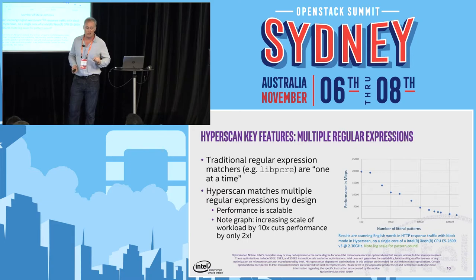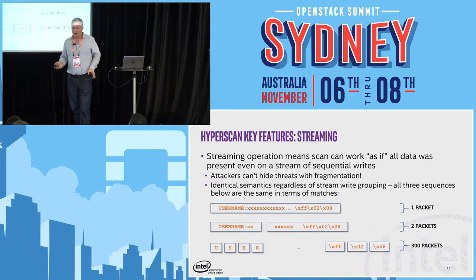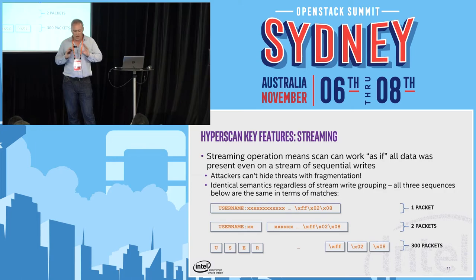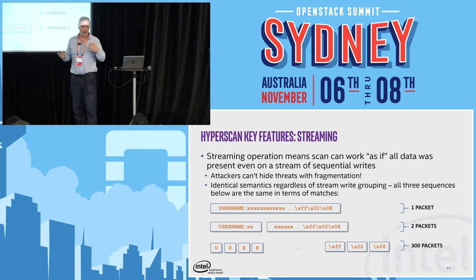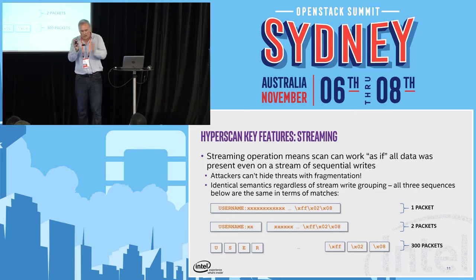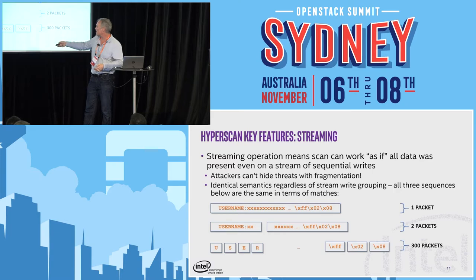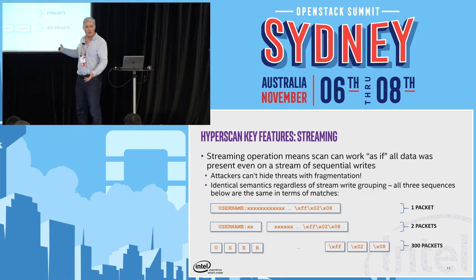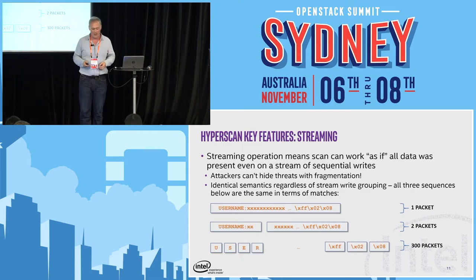The other feature we're inordinately proud of is streaming. What streaming means is that when you're doing regular expression scans, the scanning can work as if all the data was present, even when you're doing a sequence of scans and you've thrown away the old data. In streaming mode, you present us with a series of blocks in a logical stream and we'll tell you when the regex matches. You don't have to hold on to your old data or constantly re-scan a window. We can spot the same threat regardless of whether it's cut into two packets or split into 300 packets — we see it exactly the same way.